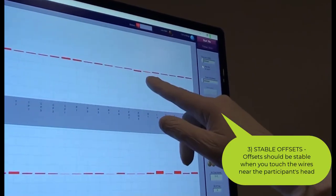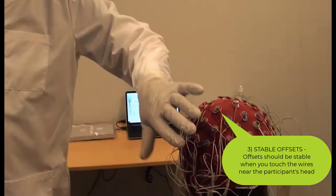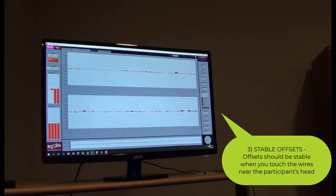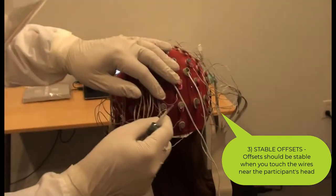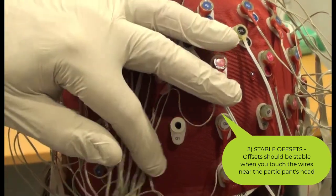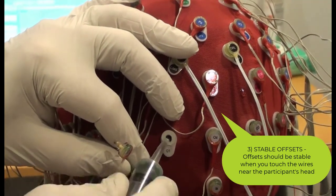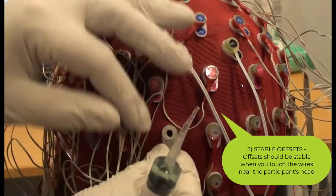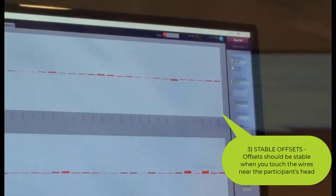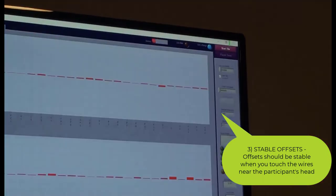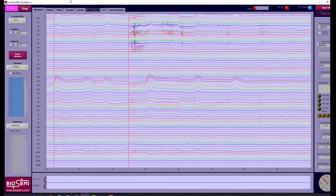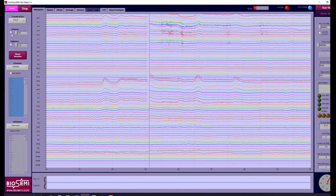Once all electrode offsets appear to be in range, look for unstable contacts. At a scale of 262 millivolts on the Offsets tab, the red bar should be quite stable when you touch the wires near the head. If you see any bars that appear to bounce or oscillate when you touch the wires, do the same process of removing, parting the hair, injecting gel, and reinserting the electrode at each of these sites.